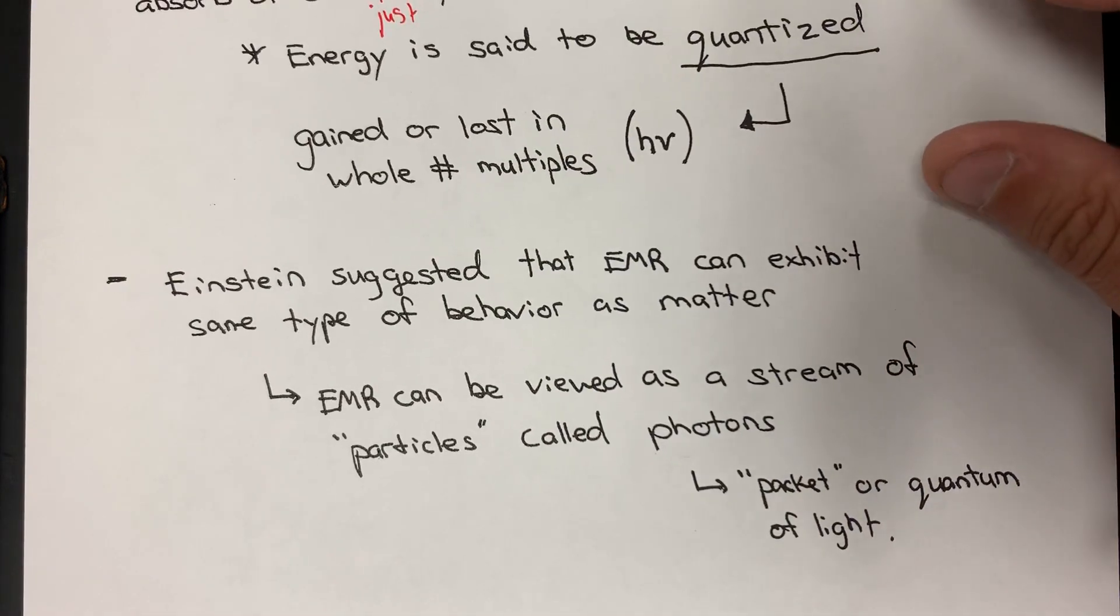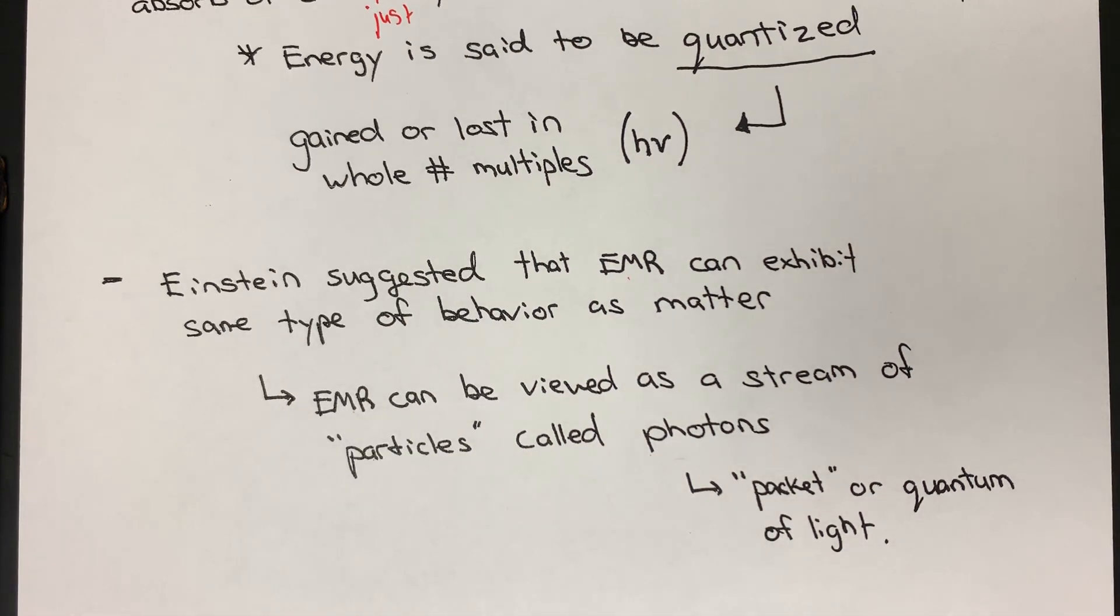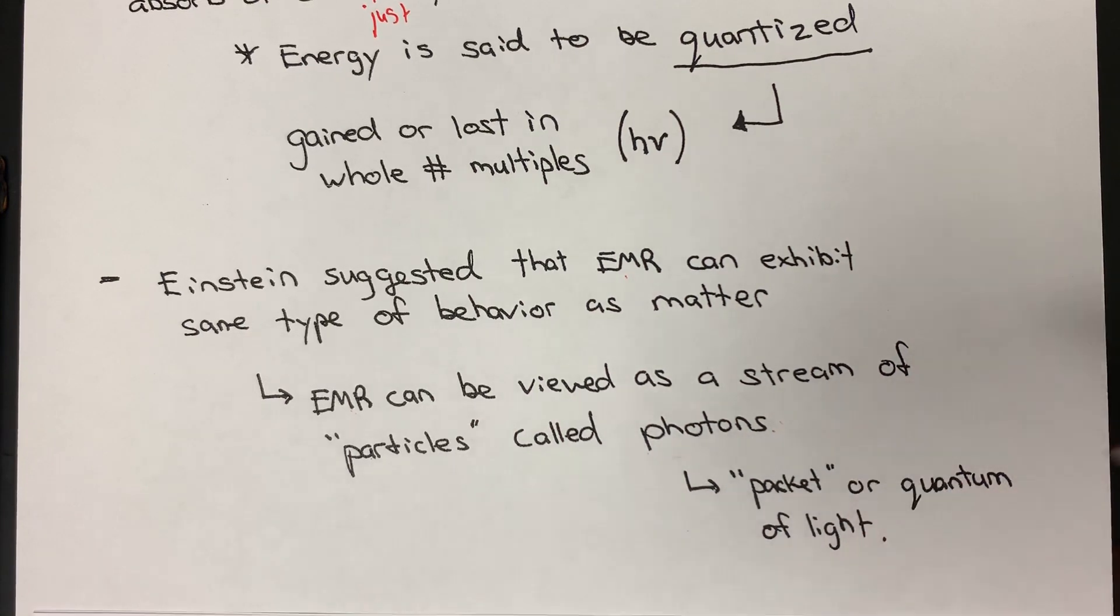It was Einstein who suggested that electromagnetic radiation can exhibit a lot of the same behaviors and properties as matter itself. This gets into the wave-particle duality. The bottom line is that electromagnetic radiation - radio waves, microwaves, infrared, and so on all the way through gamma - can in some capacity be viewed as a stream of particles. It's this stream of particles that we can call photons. A photon is really just a packet of energy, this quantized, allowable specific energy of light. And again, light's a generic term. Really, we're talking about electromagnetic radiation.